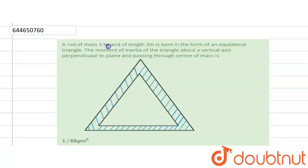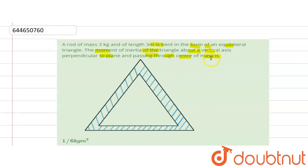The question is: given a rod of mass 3 kg and length 3 meters, bent in the form of an equilateral triangle, find the moment of inertia of the triangle about a vertical axis perpendicular to the plane and passing through the center of mass.